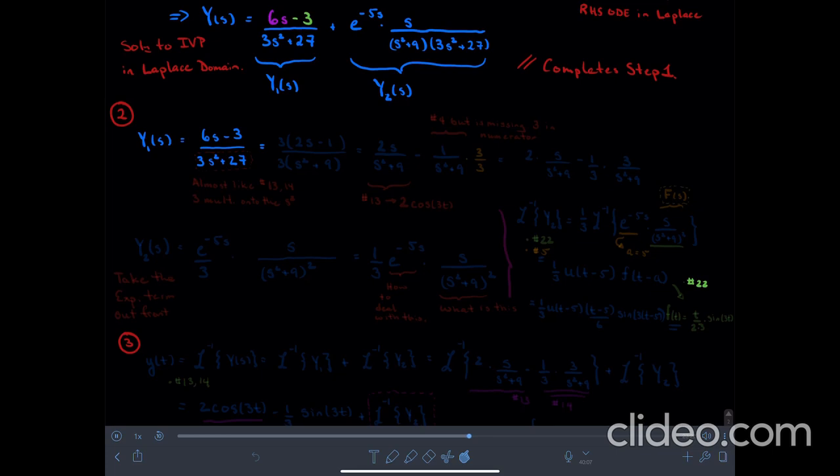Looking at this denominator, this almost looks like numbers 13 and 14 from the table. The problem is, is that there's a 3 multiplying onto the s squared term. Well, that's not a big deal. We're going to take that 3 off, and in fact, there's a 3 in the numerator too, so I'll take a 3 out of the numerator just for simplification purposes, leaving behind a 2s minus 1. And then in the denominator, I'll take a 3 off of its terms, and so leaving behind a s squared plus 9.